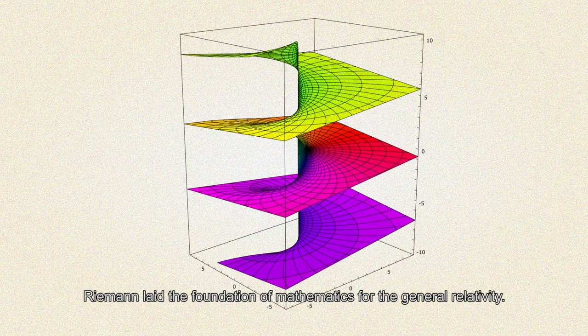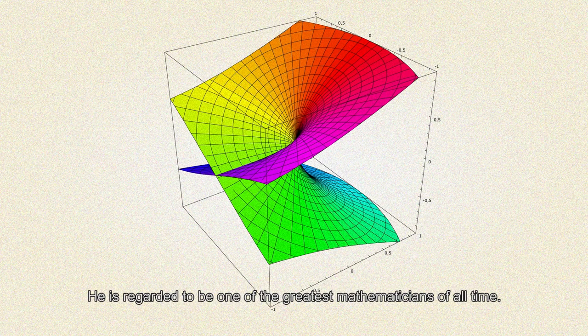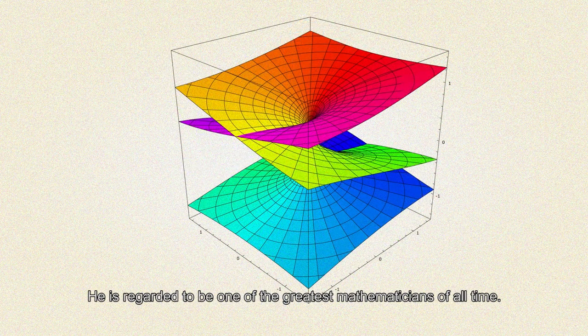Through his pioneering works in differential geometry, Riemann laid the foundation of mathematics for general relativity. He is regarded to be one of the greatest mathematicians of all time.